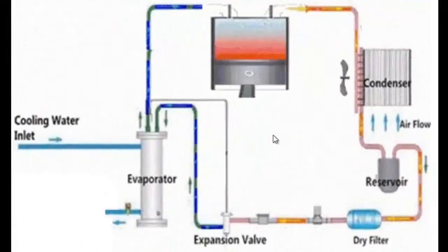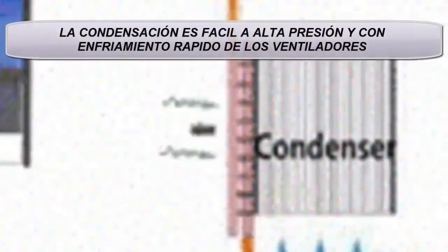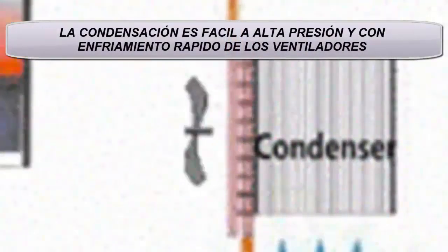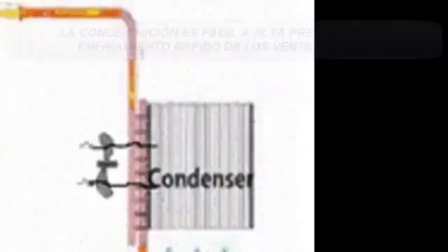3. Condenser with its fans. Because this chiller is cooled by air, in this way the refrigerant that comes out of the compressor is cooled and in turn condensed. That is, it becomes liquid again.